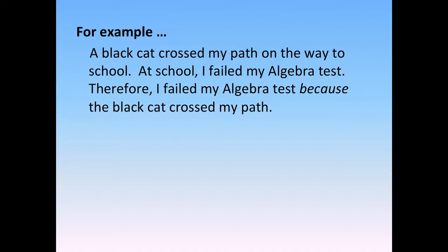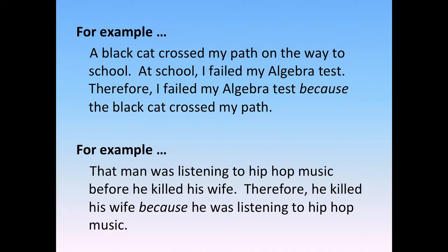For example: a black cat crossed my path on the way to school; at school I failed my algebra test; therefore, I failed my algebra test because the black cat crossed my path. Most of us would agree you probably didn't fail because of a black cat — you probably failed because you didn't study. Here's another example: that man was listening to hip hop music before he killed his wife; therefore, he killed his wife because he was listening to hip hop music. It's not likely that because one thing happened first and the other happened second that they necessarily had anything to do with each other. A post hoc fallacy claims a cause-and-effect relationship when the two things may simply be unrelated.